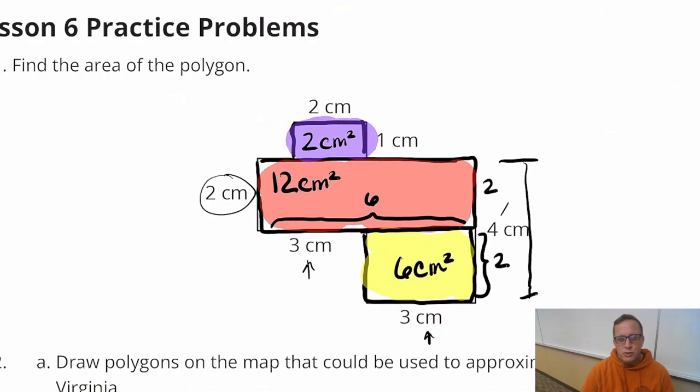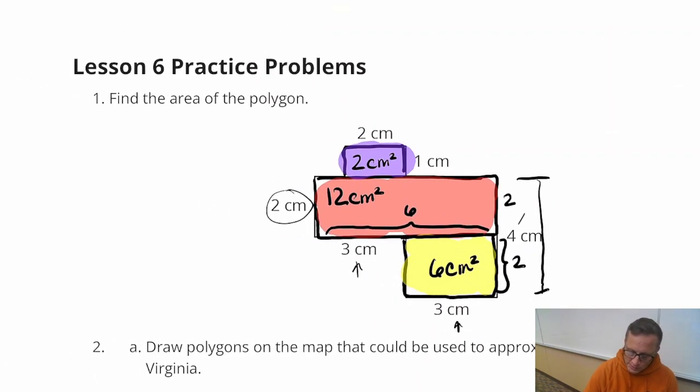Now add all that up. 2 plus 12 plus 6, and that's 20. So we just found the area of that polygon. Area equals 20 square centimeters. I think that problem was just getting kind of prepared for future problems where you're going to have to take these composite shapes or other shapes, put it together, and look at the total, the sum of all the different areas.